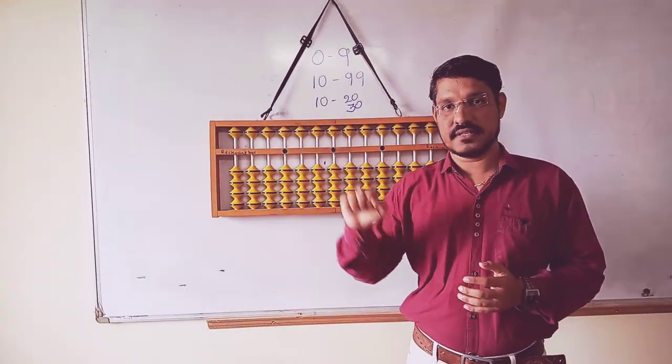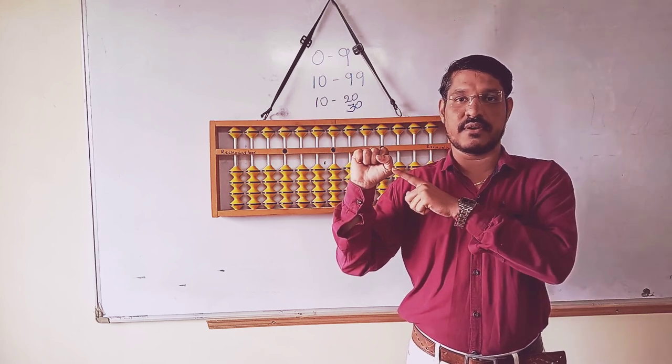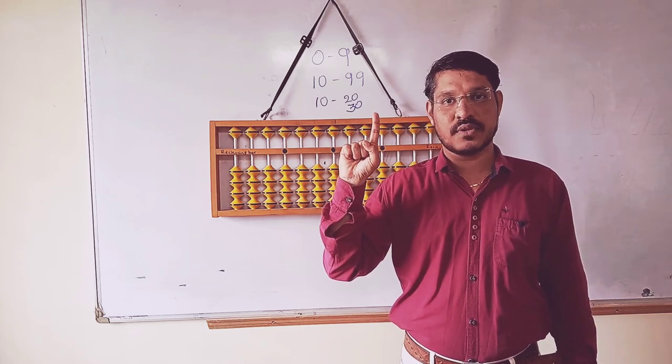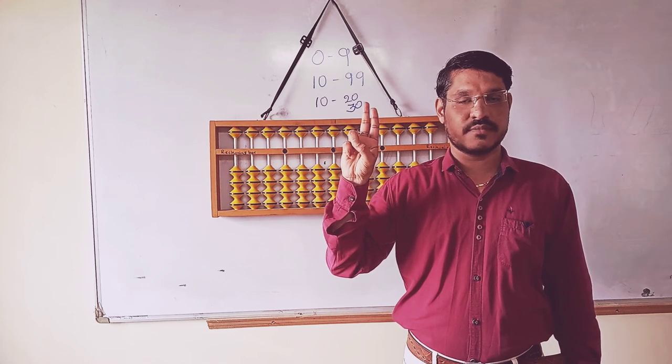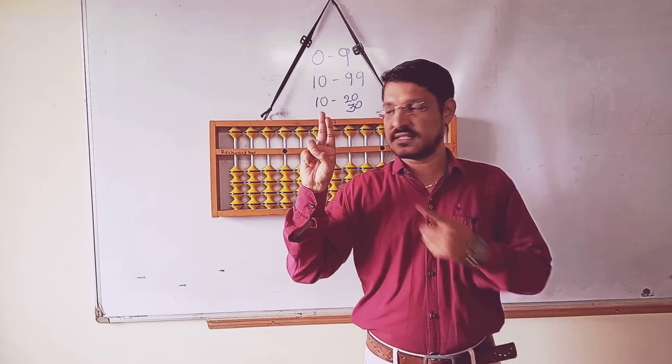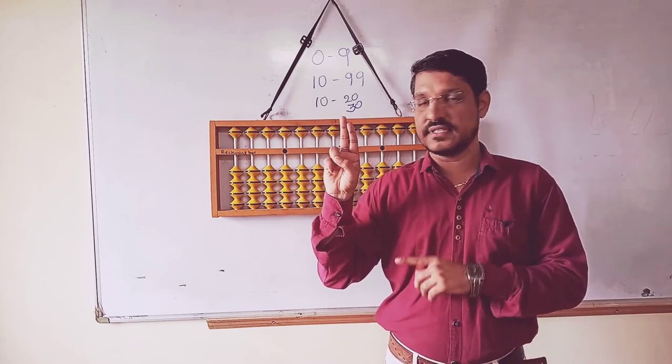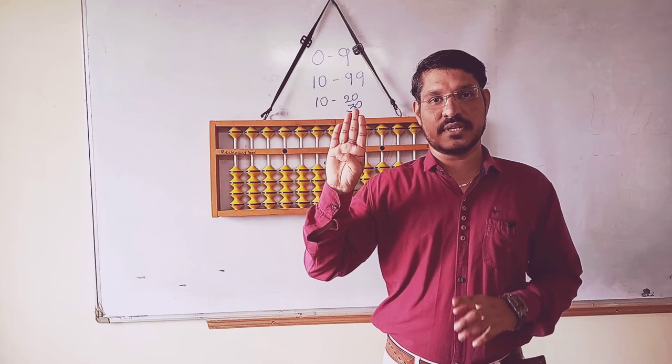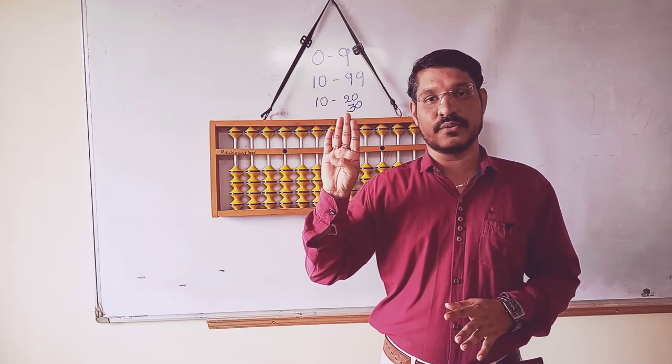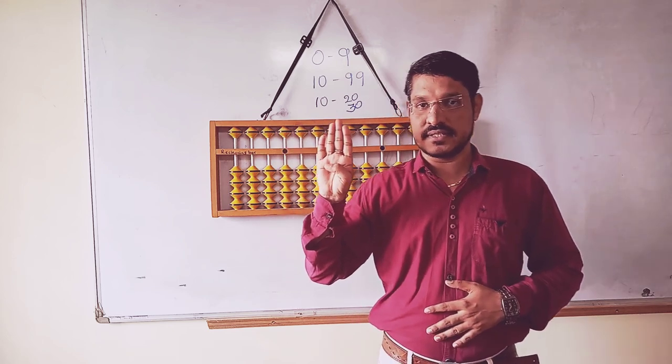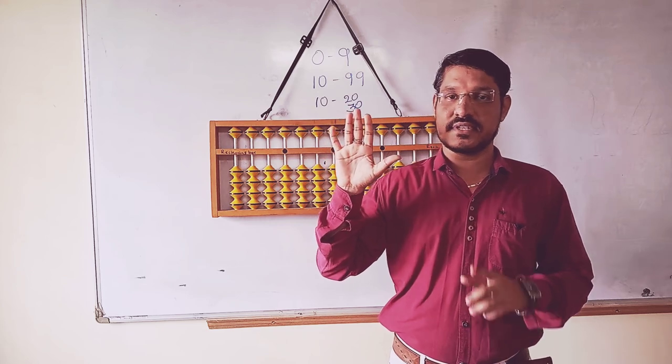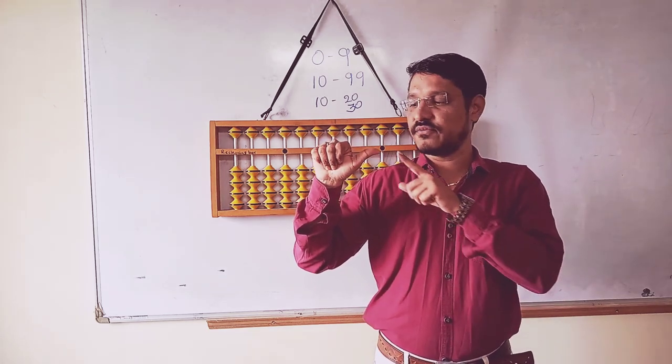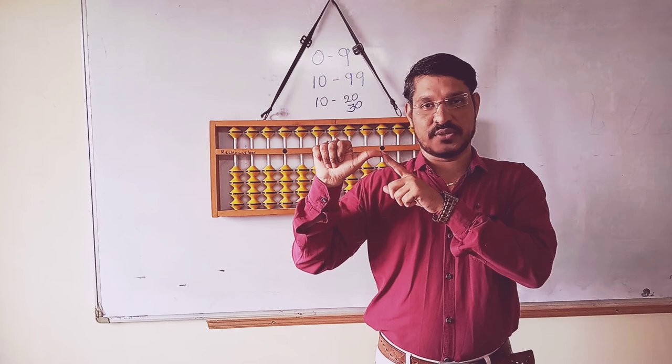It's like this Abacus. This Abacus tool we can apply through our fingers. Because here we have two rows with 10 beads. Same thing, we have 10 fingers. Through 10 fingers, we will learn from 0 to 99, 99 digits. How is it possible? Just think. I told you 1 to 99.